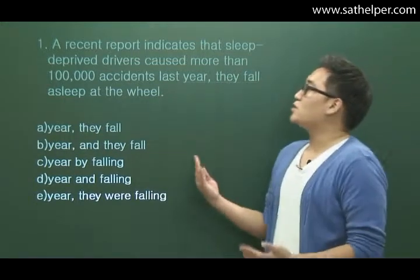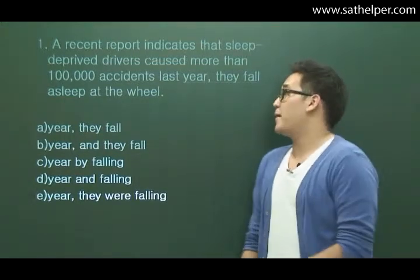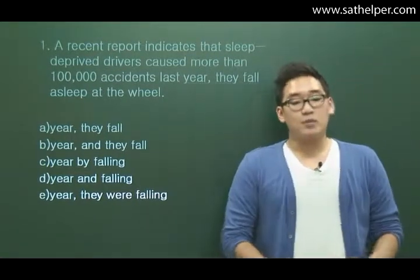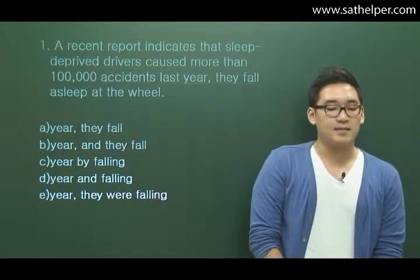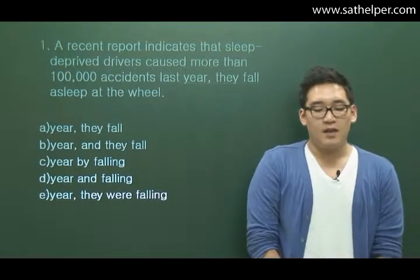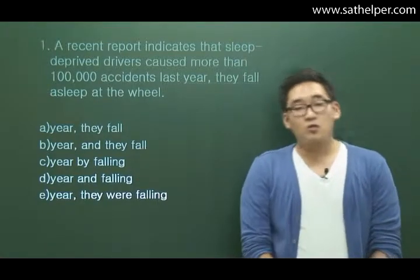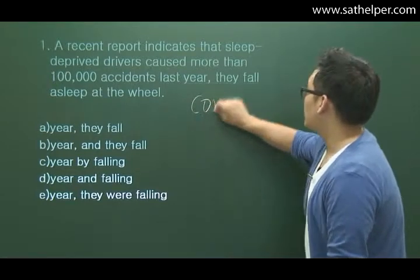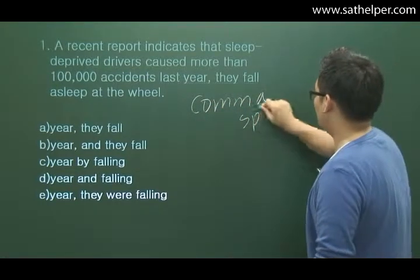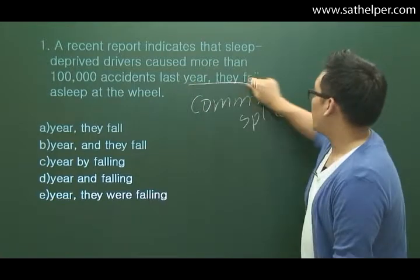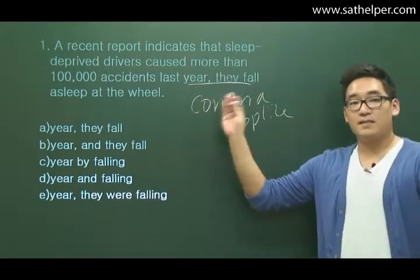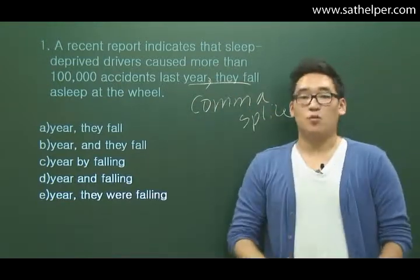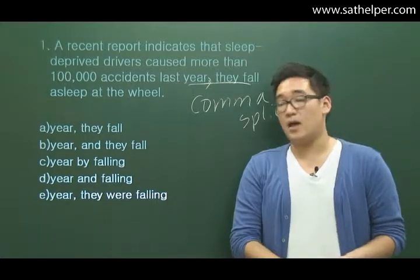With most writing sections we're going to start off with a sentence improvement question. Number one says: 'A recent report indicates that sleep deprived drivers caused more than a hundred thousand accidents last year, they fall asleep at the wheel.' The grammatical error being tested here is what we call a comma splice — we are combining two complete sentences, two independent clauses, with a comma, and that is inappropriate.